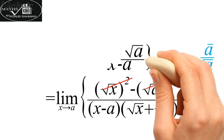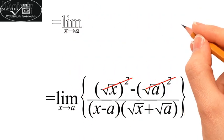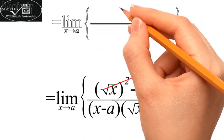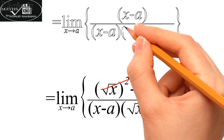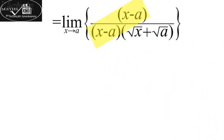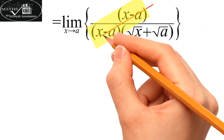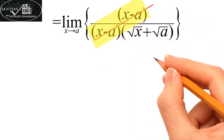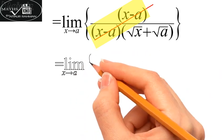Now, after simplification, we get x - a in the numerator. Cancelling out the common factors that exist in the numerator as well as in the denominator, that is x - a, we get the following.